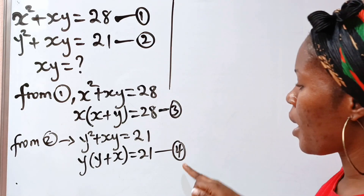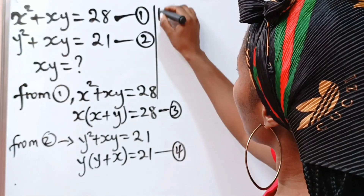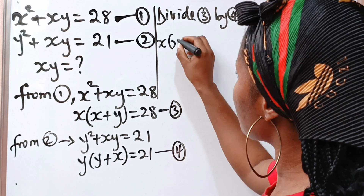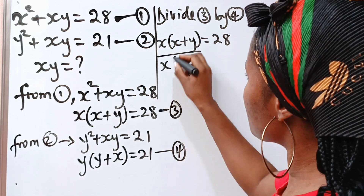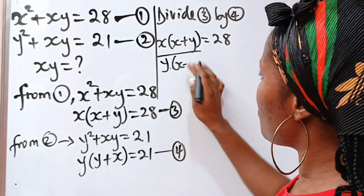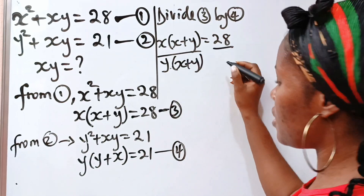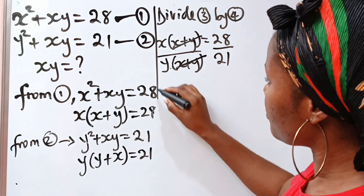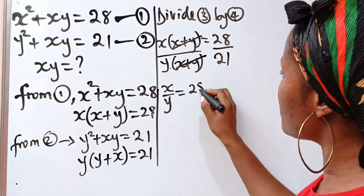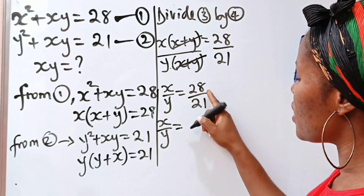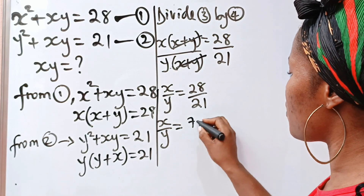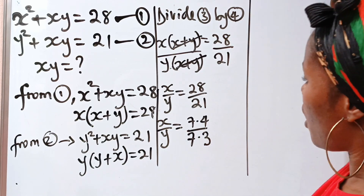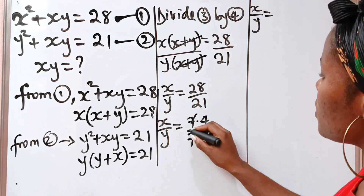Now, if we divide equation 3 by equation 4, we are going to have x bracket (x plus y) equals 28, divided by y bracket (y plus x) — which is the same as x plus y — equals 21. Notice that (x plus y) cancels out, so what we now have is x over y is equal to 28 over 21, which simplifies to 4 over 3.